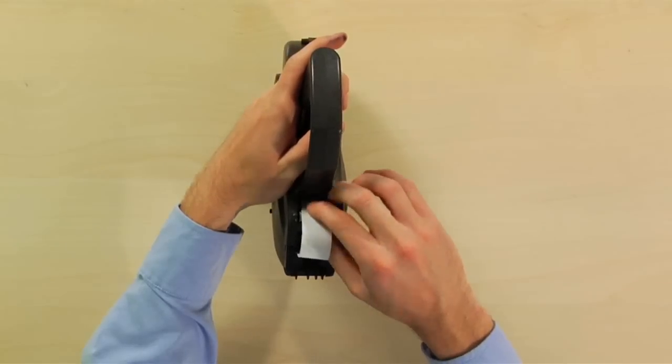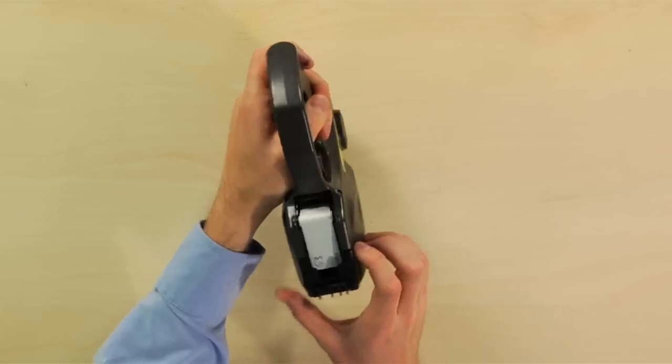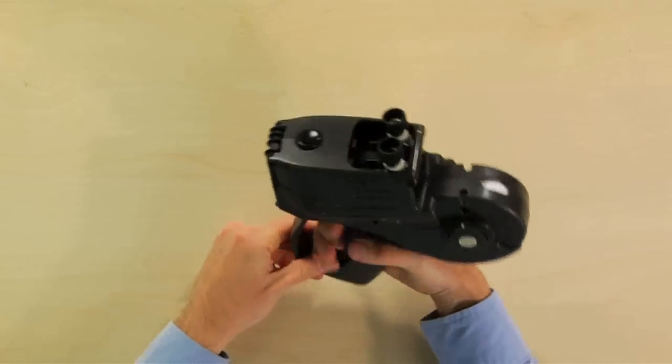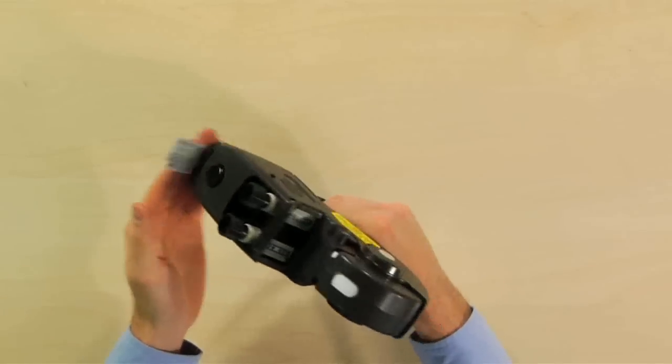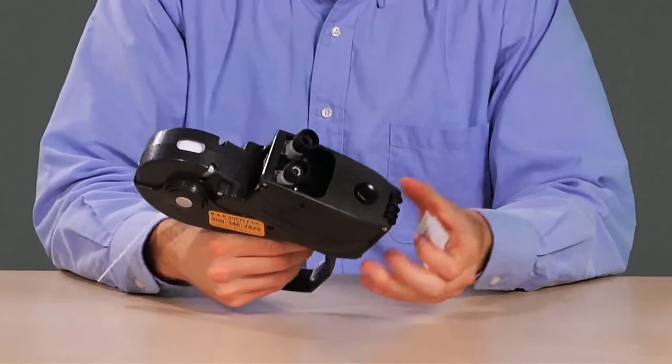When the paper meets resistance from the feed wheel, keep your hand on the paper and with the other hand, begin clicking the hand trigger. The backing paper should start to tighten up and printed labels should start coming out the top of the gun.